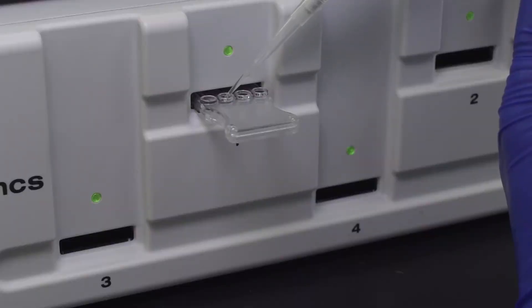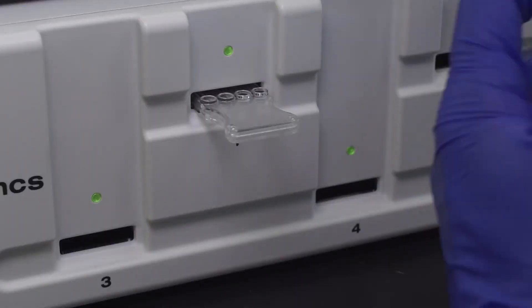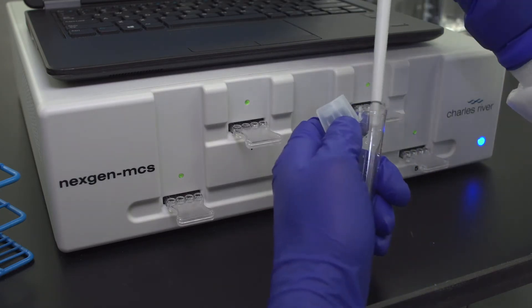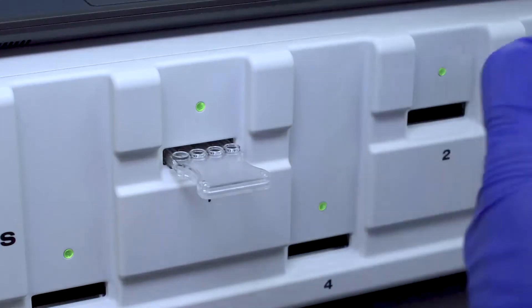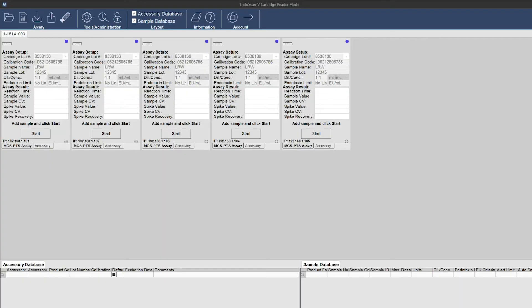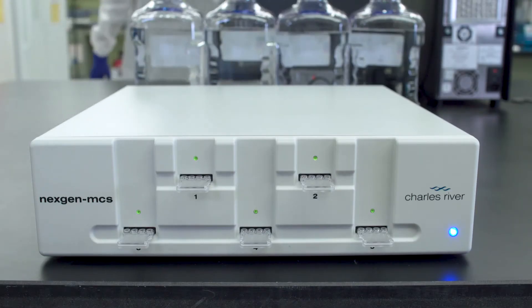Carefully pipette 25 micro-liters of sample into all four sample reservoirs of the inserted cartridge. To do so, hold the pipette so that the tip is at an angle and not completely at the bottom of the sample reservoir. Press Start within EndoScan-V after each sample has been added to the cartridge. Repeat this procedure for four additional samples.